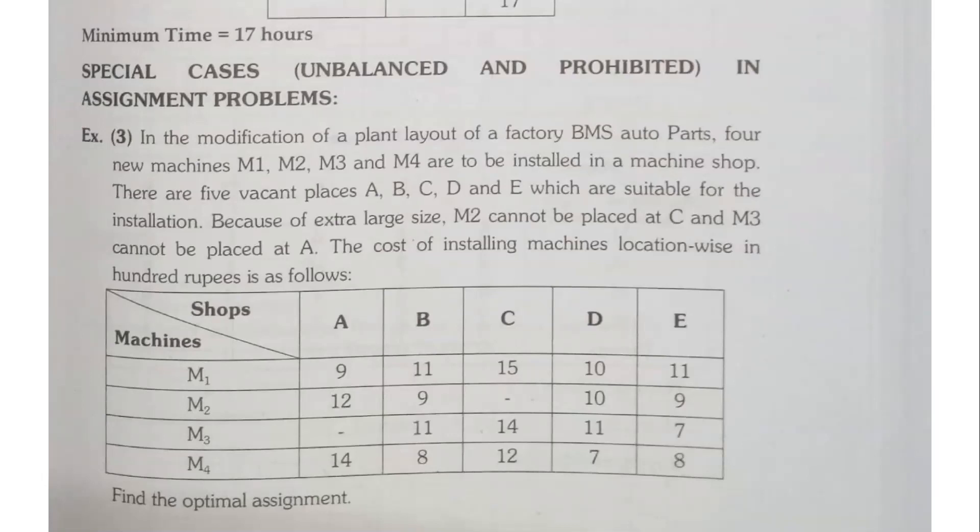In the modification of a planned layout of a factory BMS auto parts, four new machines M1, M2, M3 and M4 are to be installed in a machine shop. There are five vacant places A, B, C, D and E which are suitable for the installation.